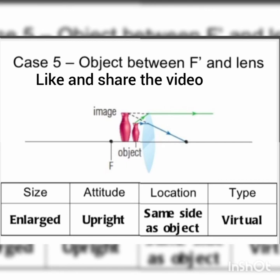Case 4: Object between f and the lens. The object is very close, between f and the lens. After passing through the convex lens, the rays diverge. If you extend these two rays backward with imaginary dotted lines, the image forms on the same side as the object, beyond the lens in the virtual region. The image is enlarged in size, upright in attitude, and virtual.